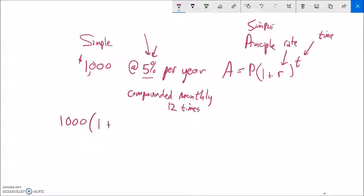What they do is they take a 12th of the 5%. So this is going to look like this: 1,000, one plus that rate, but they divide the rate by 12. So you actually get like a much smaller rate, but it does, it gets done 12 times in a year.